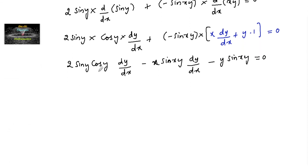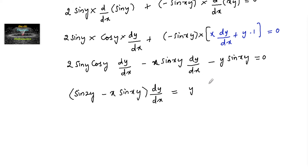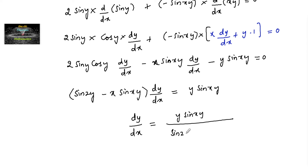We have 2 sin y cos y = sin 2y, so: sin 2y · dy/dx minus x sin(xy) · dy/dx = y sin(xy). Therefore dy/dx = y sin(xy) / (sin 2y − x sin(xy)). This is the differentiation of the given function.